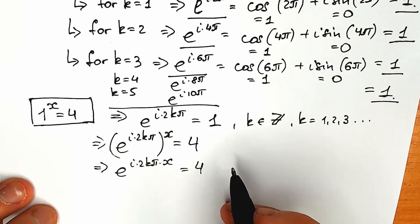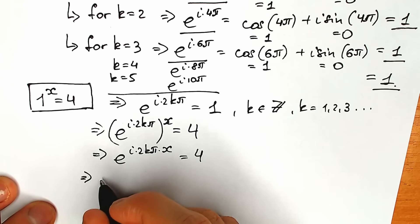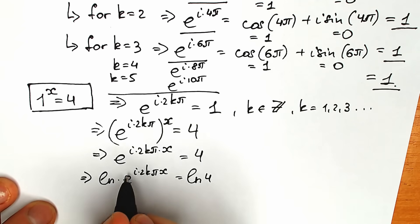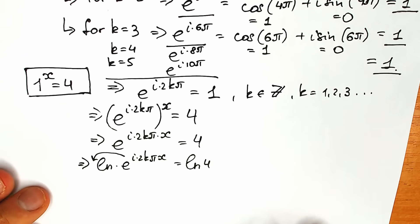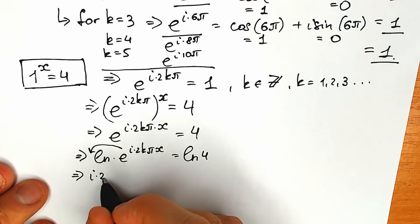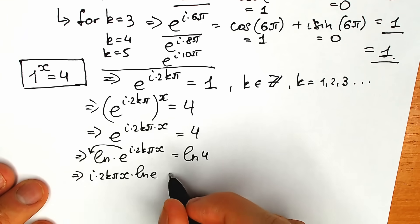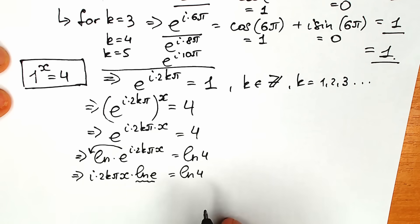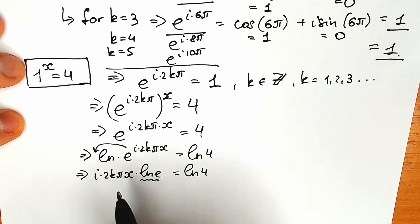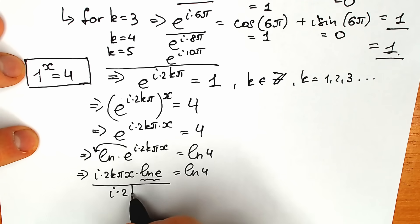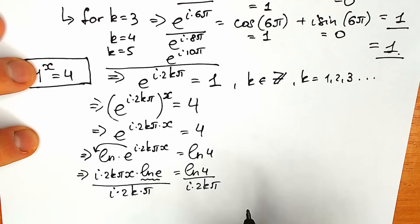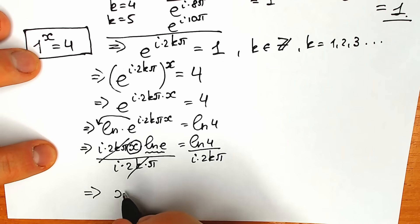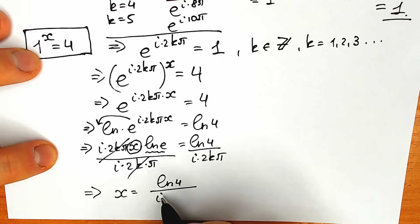We can multiply our powers, so we have e to the power i times 2kπ times x equals 4. To find x, the best way is to apply natural log from both sides. On the left side: natural log of e to the power i times 2kπ·x equals natural log 4. This power comes down due to the log property, giving i times 2kπ·x times natural log e equals natural log 4. Since natural log e equals 1, we can cancel it. Now divide both sides by i·2kπ, and we cancel it on the left side, leaving only x.